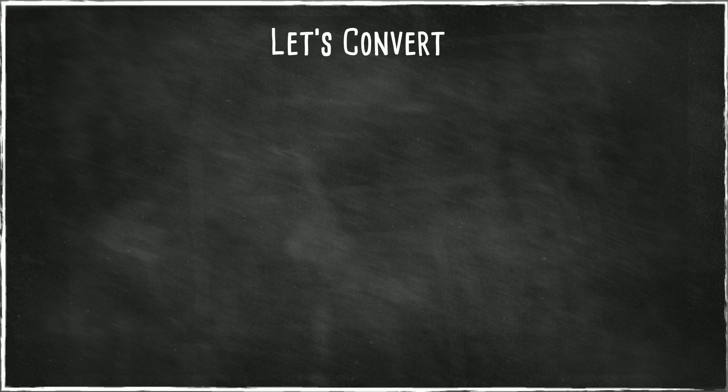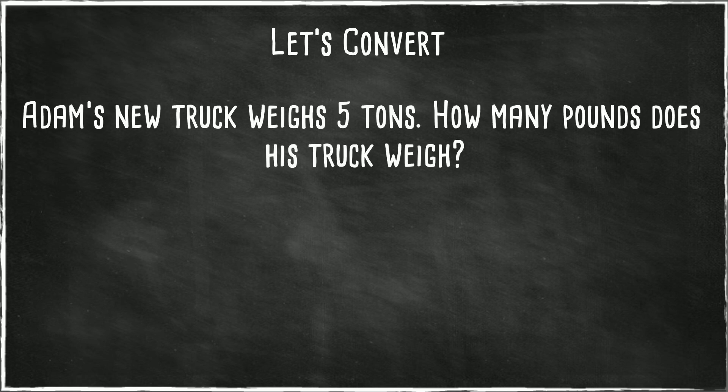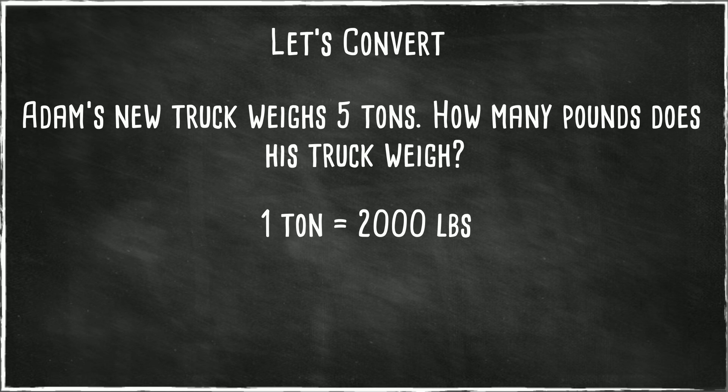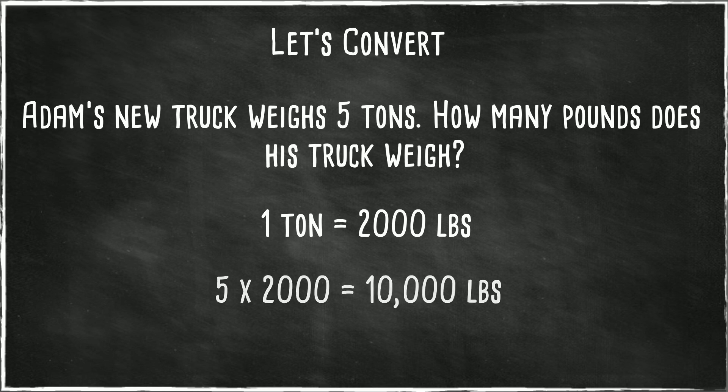Now let's complete a couple of conversions between these different units of weight. First, Adam's new truck weighs five tons. How many pounds does this truck weigh? Since there are 2,000 pounds in a ton, we multiply five times 2,000, which equals 10,000 pounds.